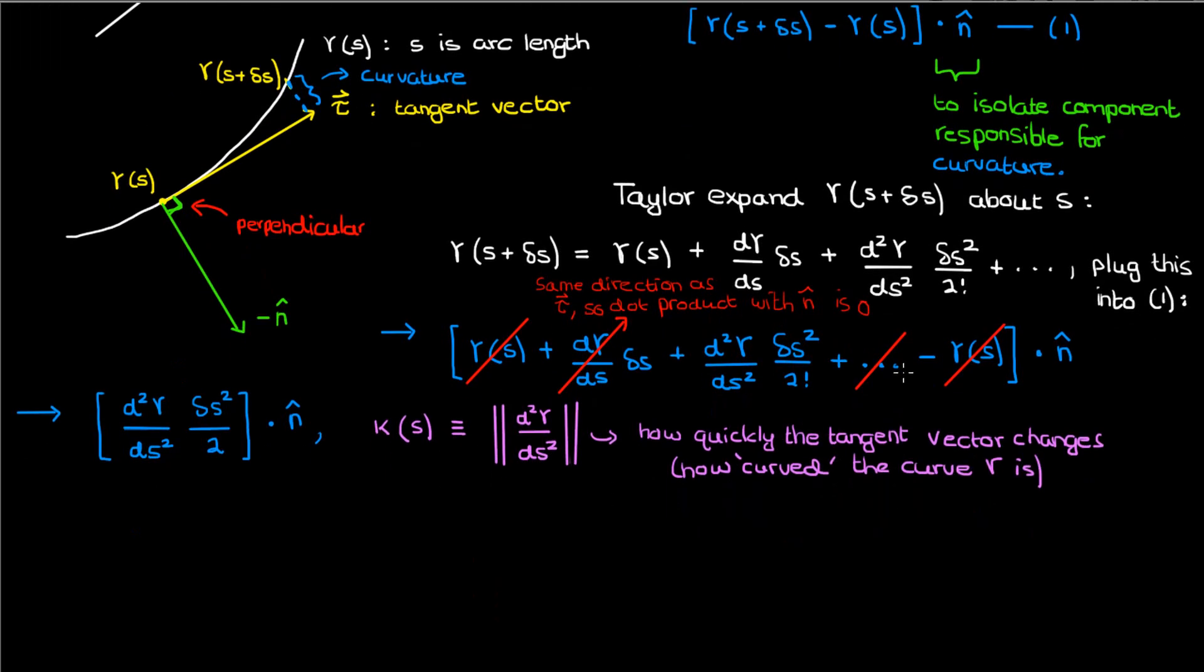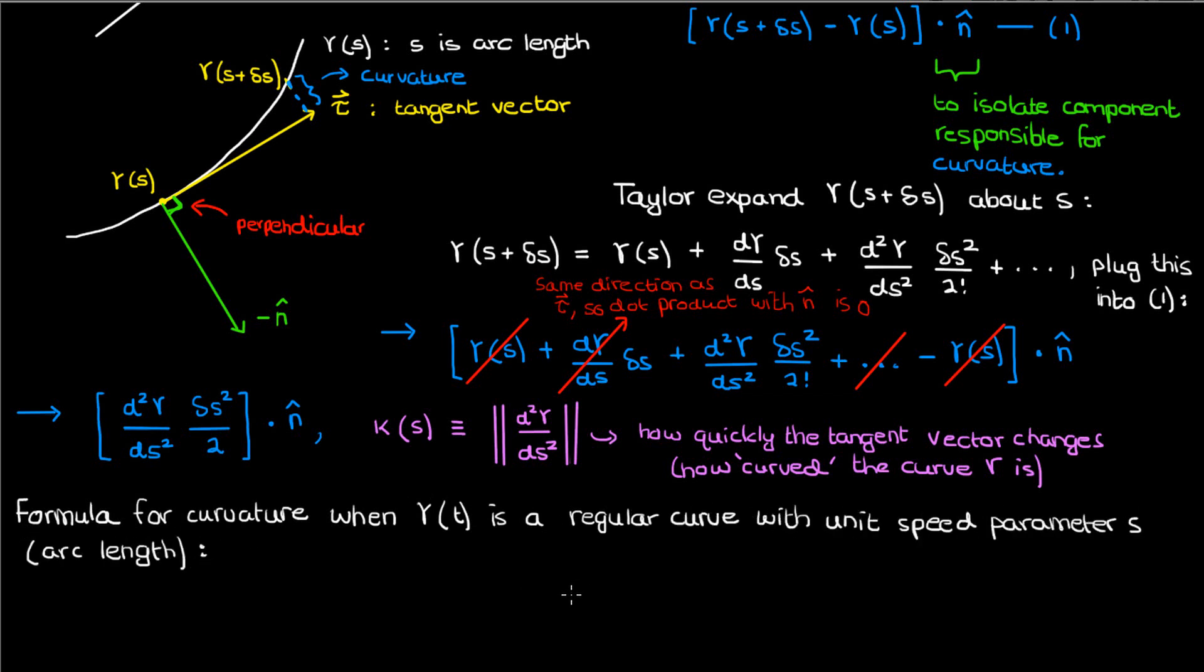Now this is the definition of curvature but it's all in terms of arc length. What if we just had a regular curve gamma of t with a unit speed parameter s corresponding to arc length? How would we calculate curvature then? Well we'll have to find an expression for the second derivative of gamma with respect to arc length. Once we do that we've found our κ basically, we just take the magnitude, but to get there we're going to need to use the chain rule and go up to the second derivative of gamma with respect to t, so let's do all that.